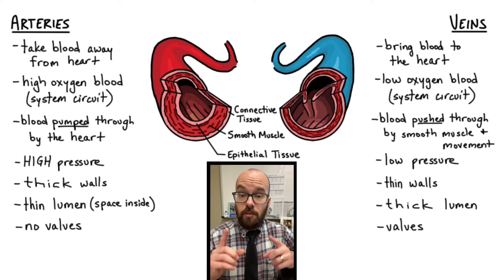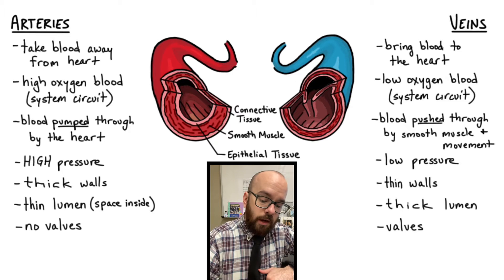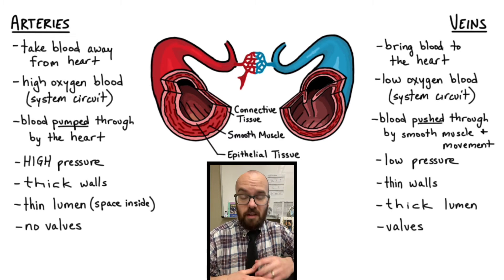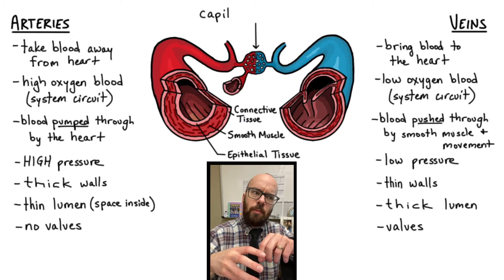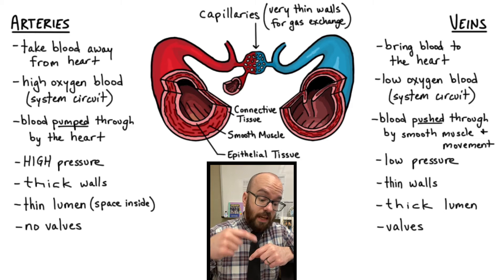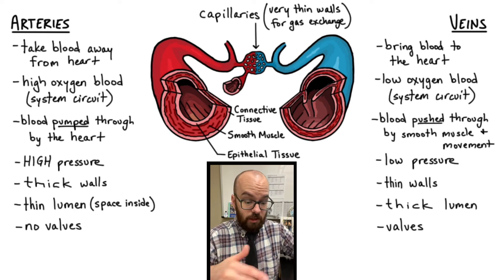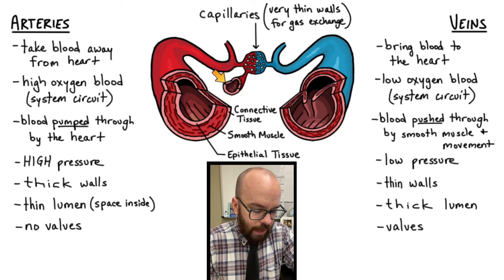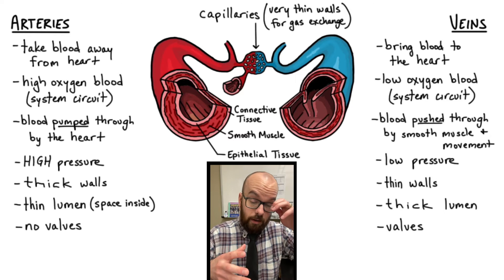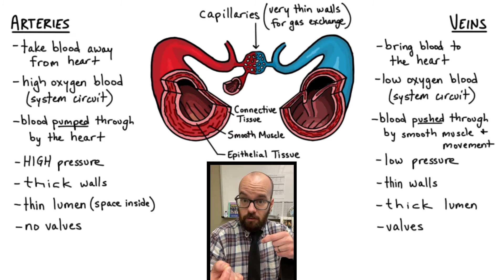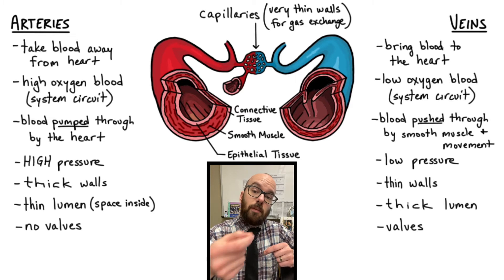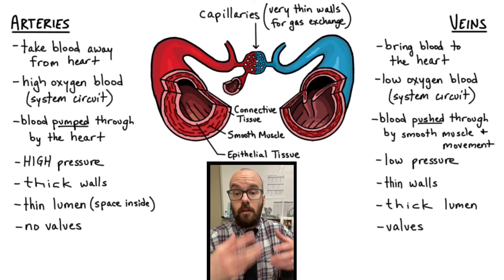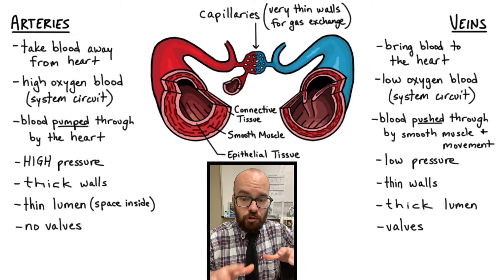There is one more blood vessel to discuss: the capillaries, which connect arteries and veins and are where a lot of the action happens. The main function of capillaries is gas exchange — the oxygen stored in hemoglobin in the blood cells needs to pass out of the capillaries to all of the surrounding tissue cells. The walls of capillaries consist of just one thin layer of epithelial cells. This thin layer is necessary so that oxygen and carbon dioxide can easily pass in and out of the blood vessel.